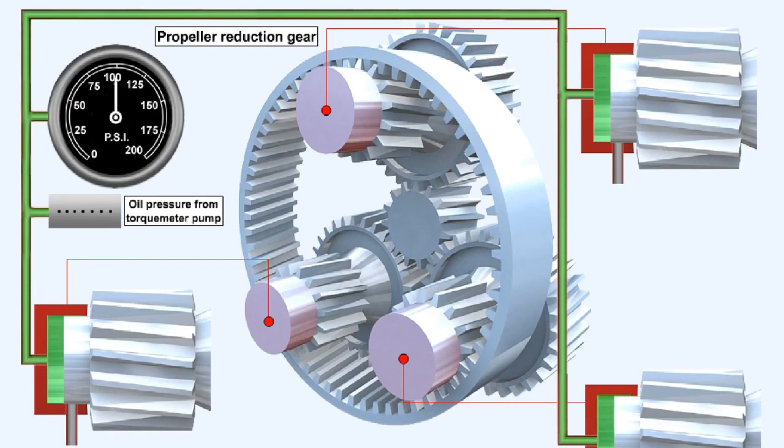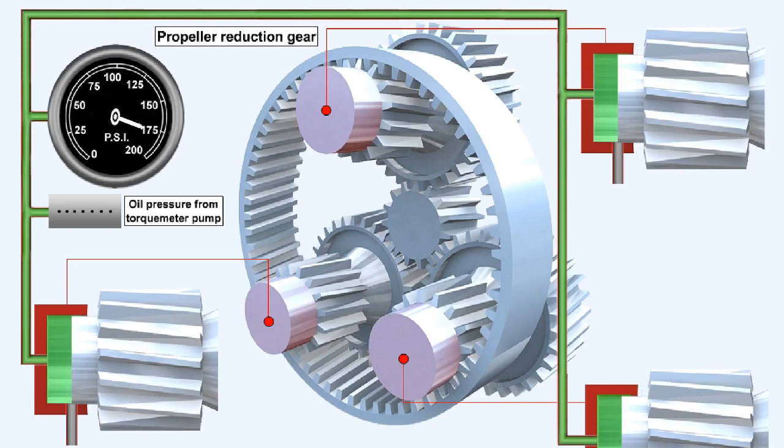If engine power output increases, the axial thrust being transmitted by each gear increases, which forces its shaft further into its retaining cylinder. Thus the shaft is forced into a new position where it blocks the bleed hole. The torque meter oil pressure, being unable to escape, now builds up to a new higher value, until it's able to force the gear shaft back into the sensitive position, where once again it's able to balance the axial thrust being developed by the helical gear.